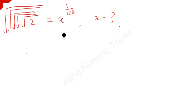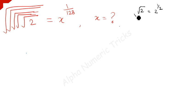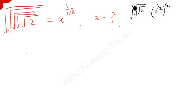So, here what we have to do is — you know how to write root 2. The square root of 2 can be written as 2 to the power 1 over 2. Suppose this is again on another root. Then you have to multiply that whole to the power 1 over 2. Another root is there, then you multiply again 1 over 2, like that.